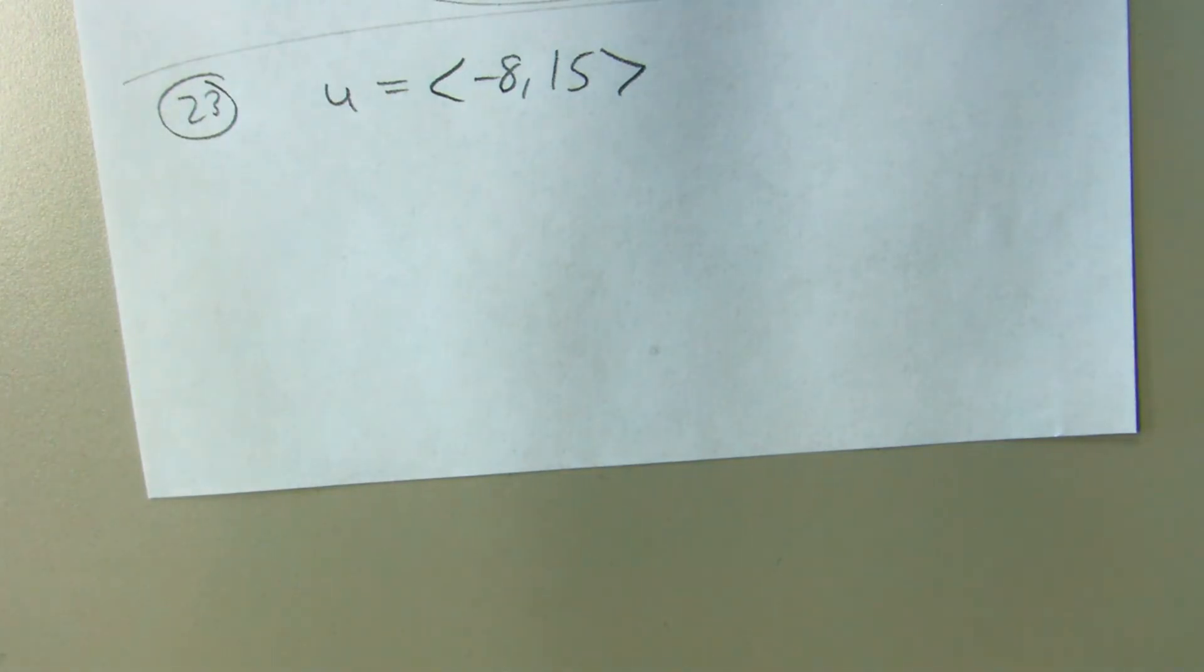So we can sketch that, hit the right triangle. I could use the Pythagorean theorem, hypotenuse squared, to find the magnitude.